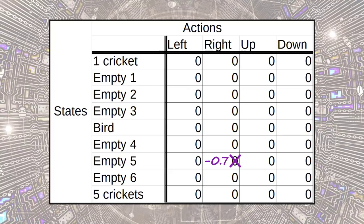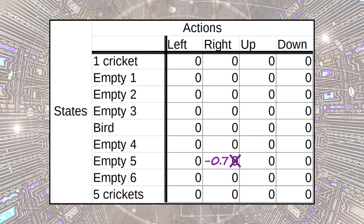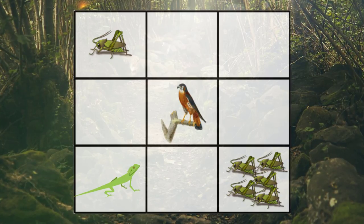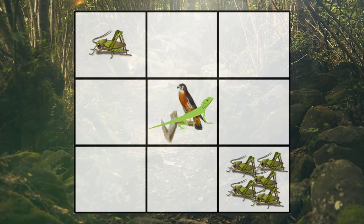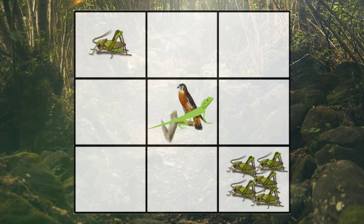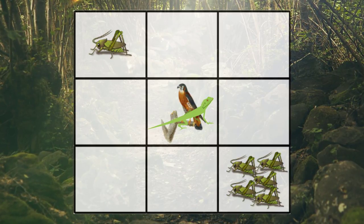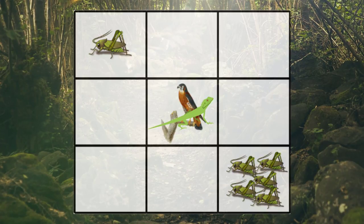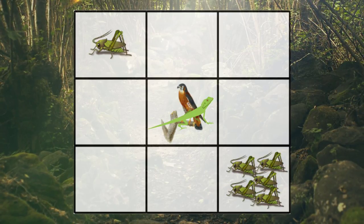We take this new Q-value and store it in our Q-table for this particular state-action pair. We've now done everything needed for a single time step, and this same process will happen for each time step until termination in each episode. We can also specify a max number of steps that our agent can take before the episode auto-terminates. Termination will occur if the lizard reaches the state with 5 crickets or the state with the bird, or if the lizard hasn't reached termination after 100 steps. Finally, once the Q-function converges to the optimal Q-function, we can obtain our optimal policy.